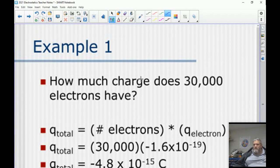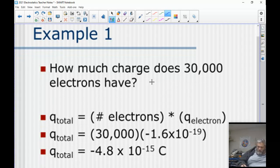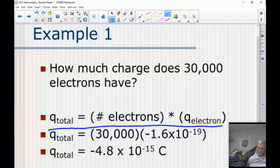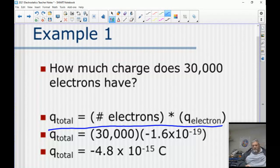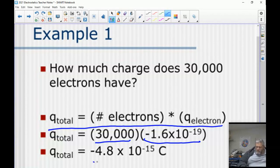So let's see a couple of examples. How much charge does 30,000 electrons have? Well, we start off with the equation, it's not really an equation, it's kind of the expression that the total charge is going to be the number of electrons times the charge of one electron. Well, we know there's 30,000 electrons. We know from the last slide that the charge of electron is negative 1.6 times 10^-19. Using our calculator, we just multiply them together and we get that total charge to be negative 4.8 times 10^-15 coulombs.